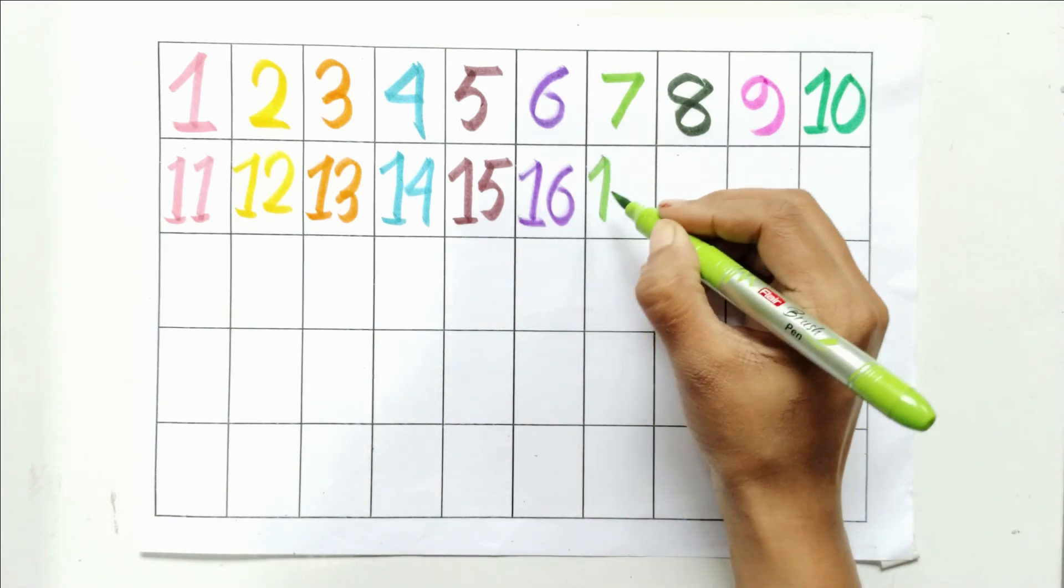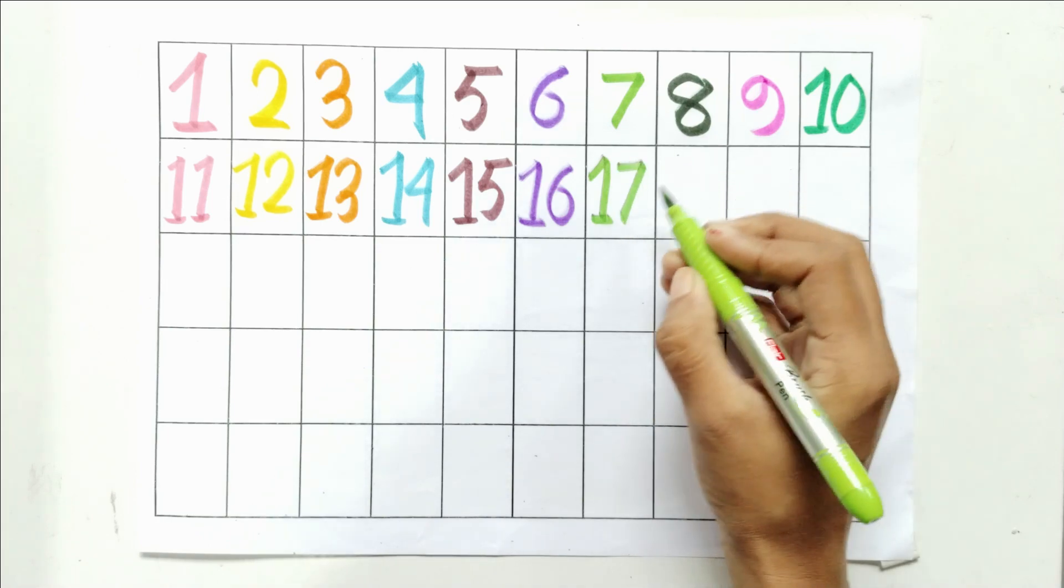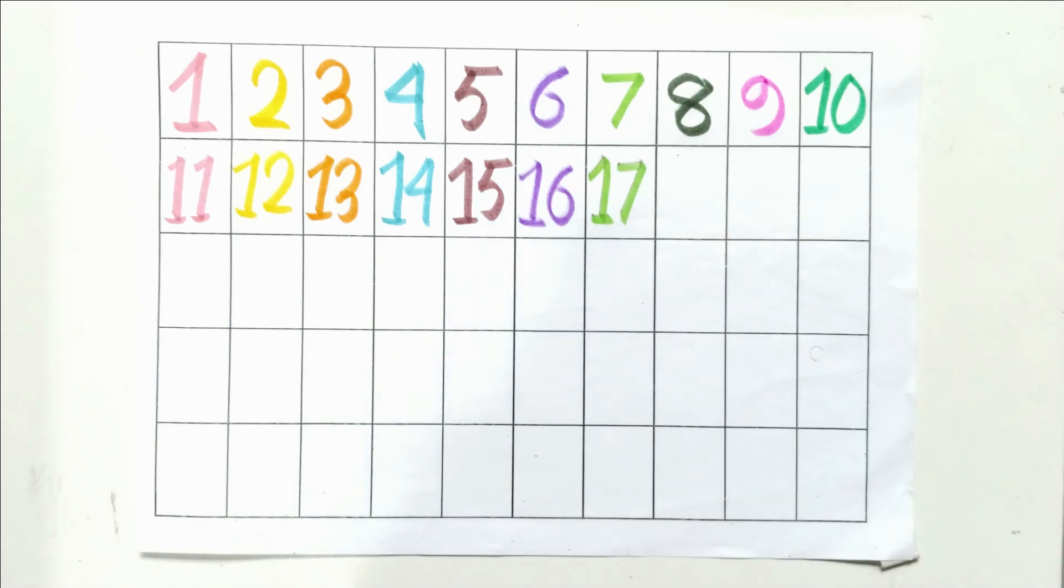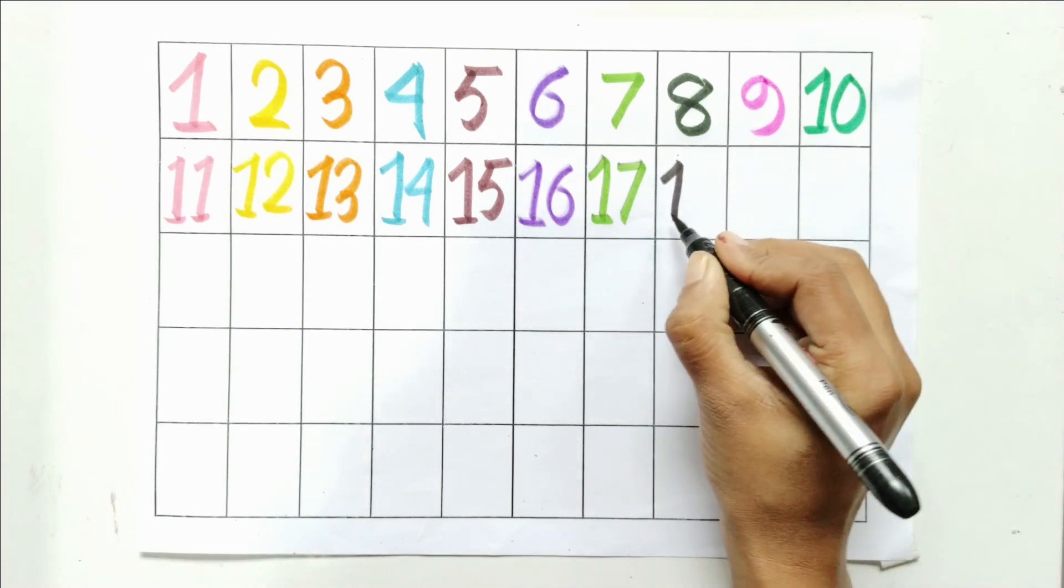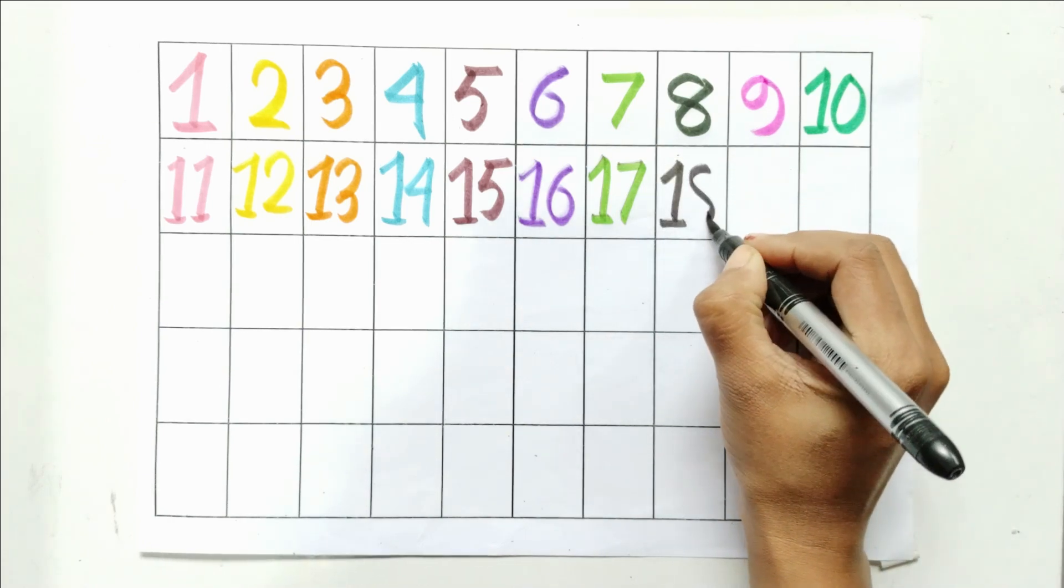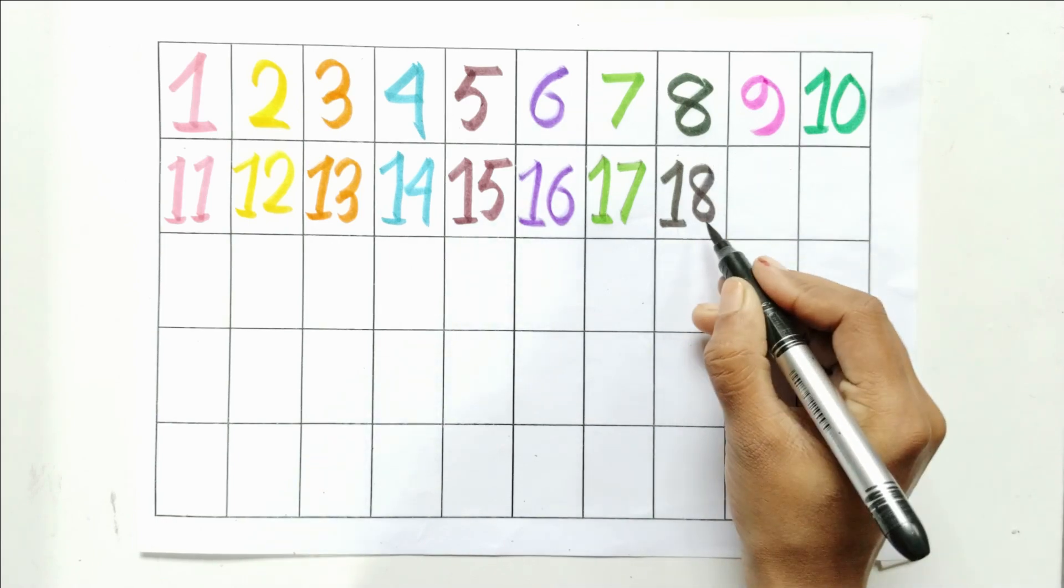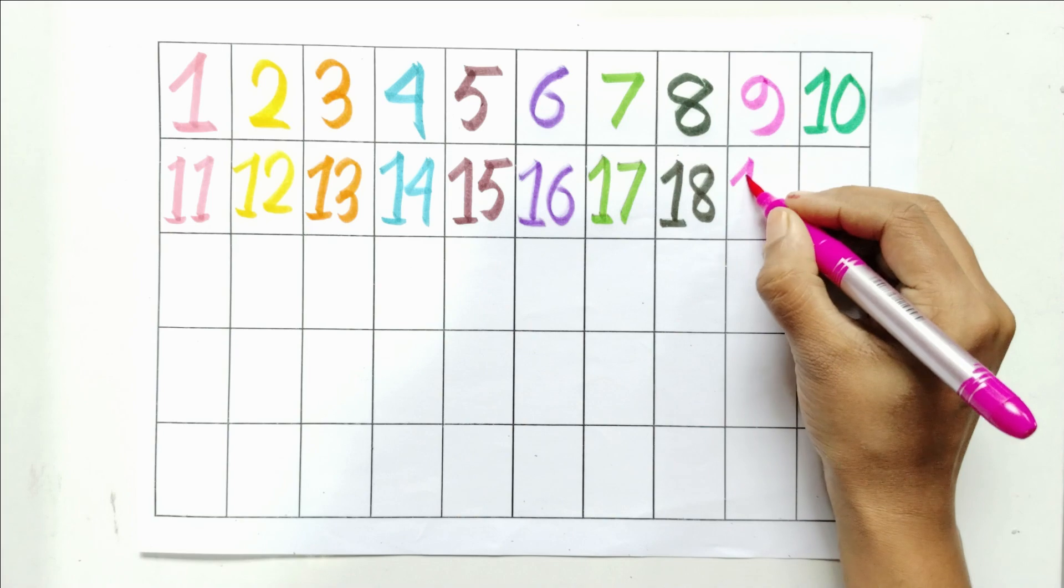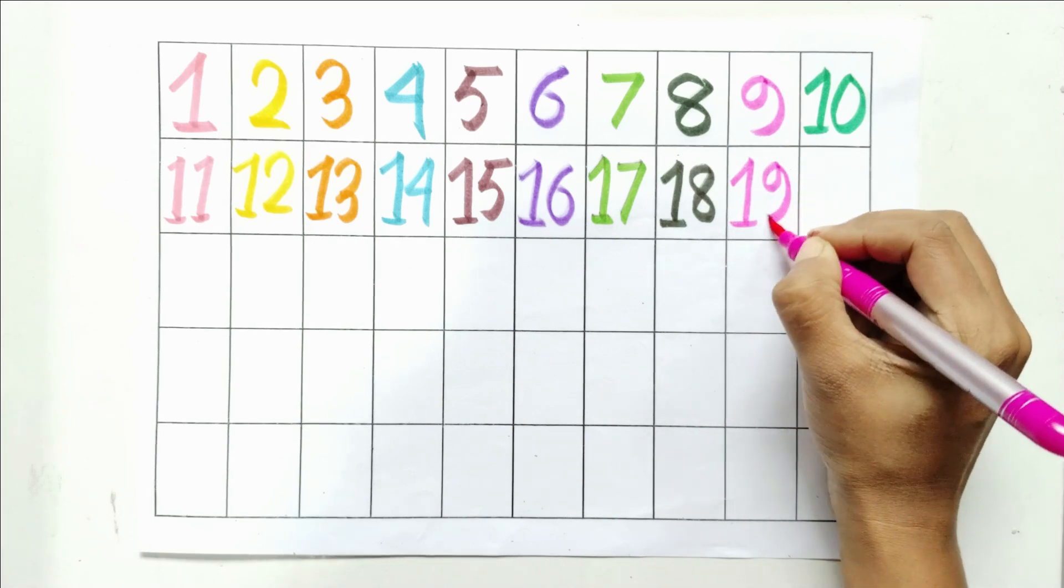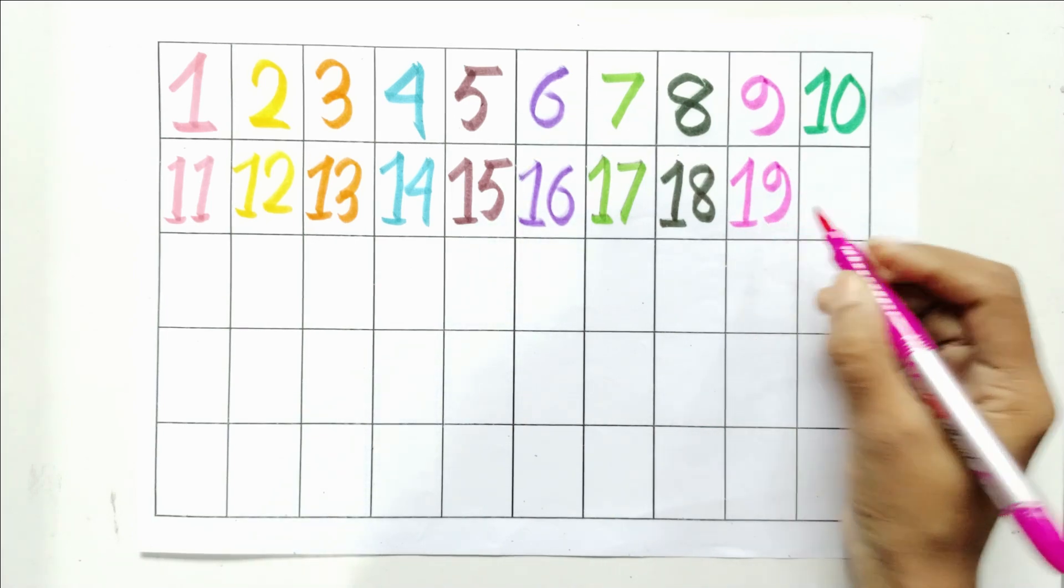One and seven, seventeen. One and eight, eighteen. One and nine, nineteen.